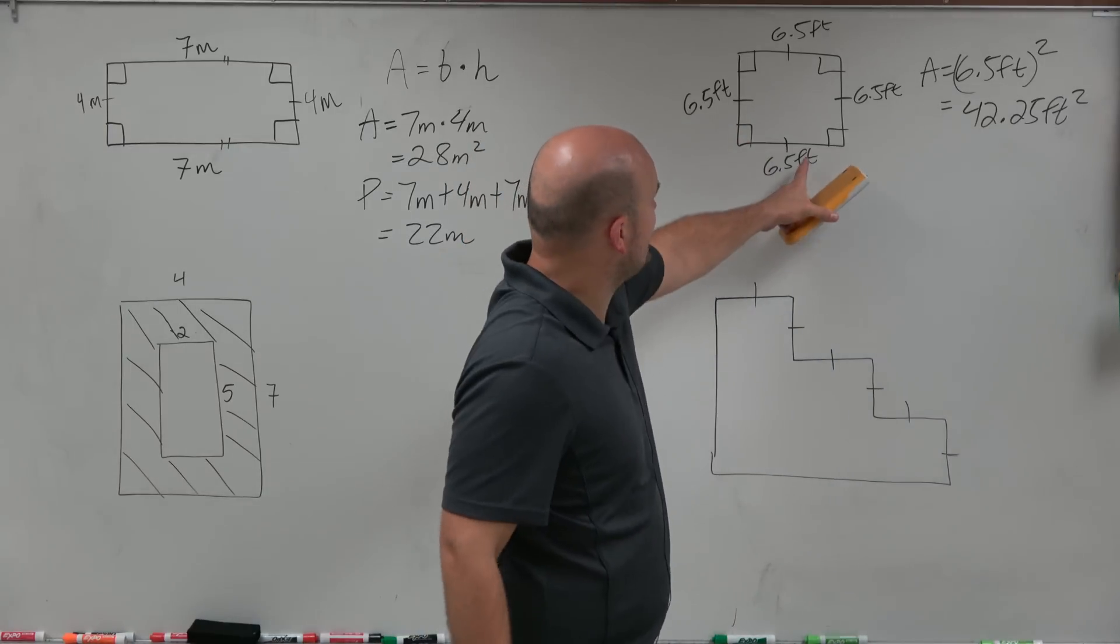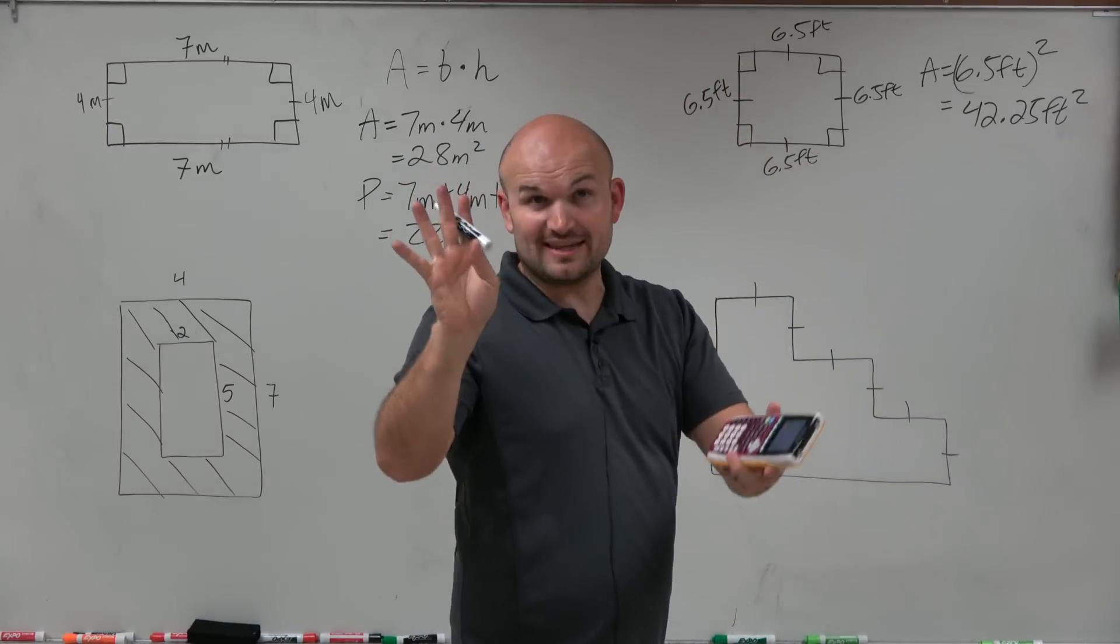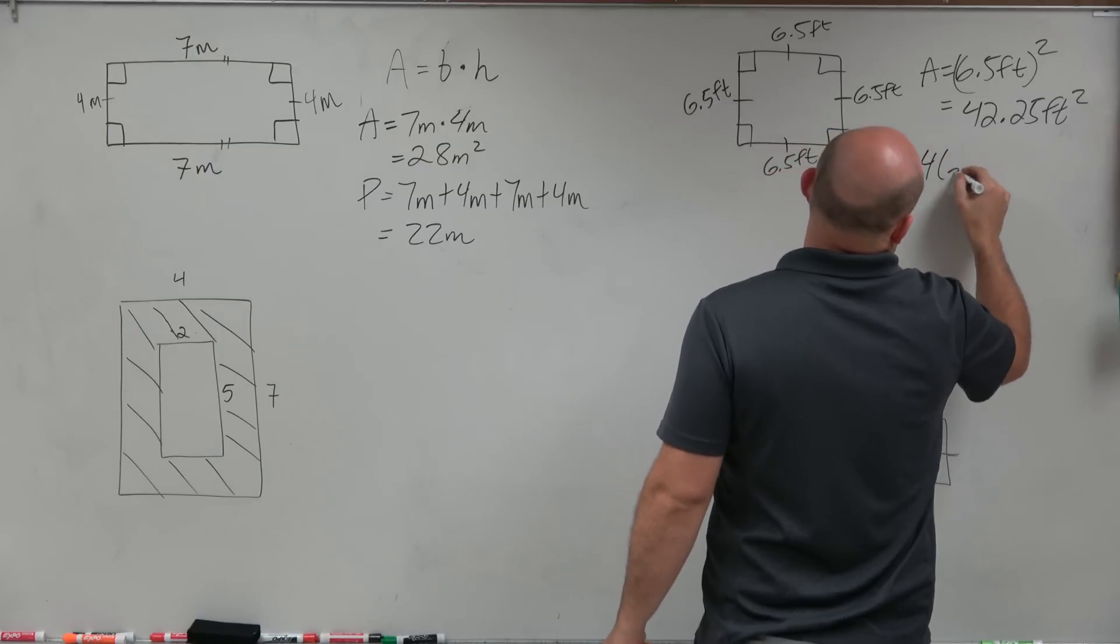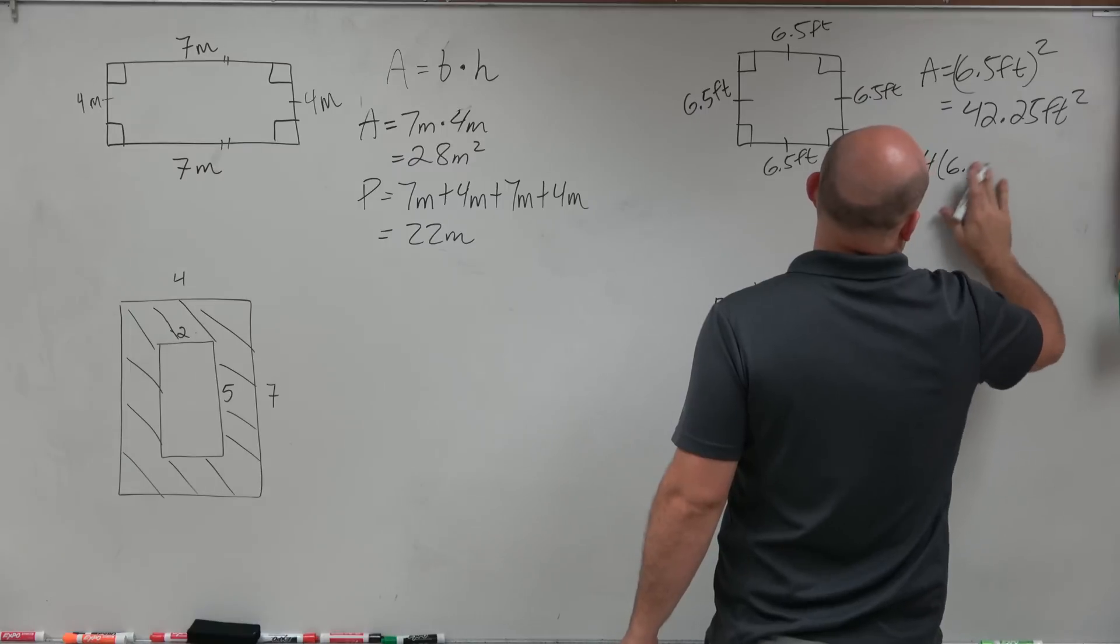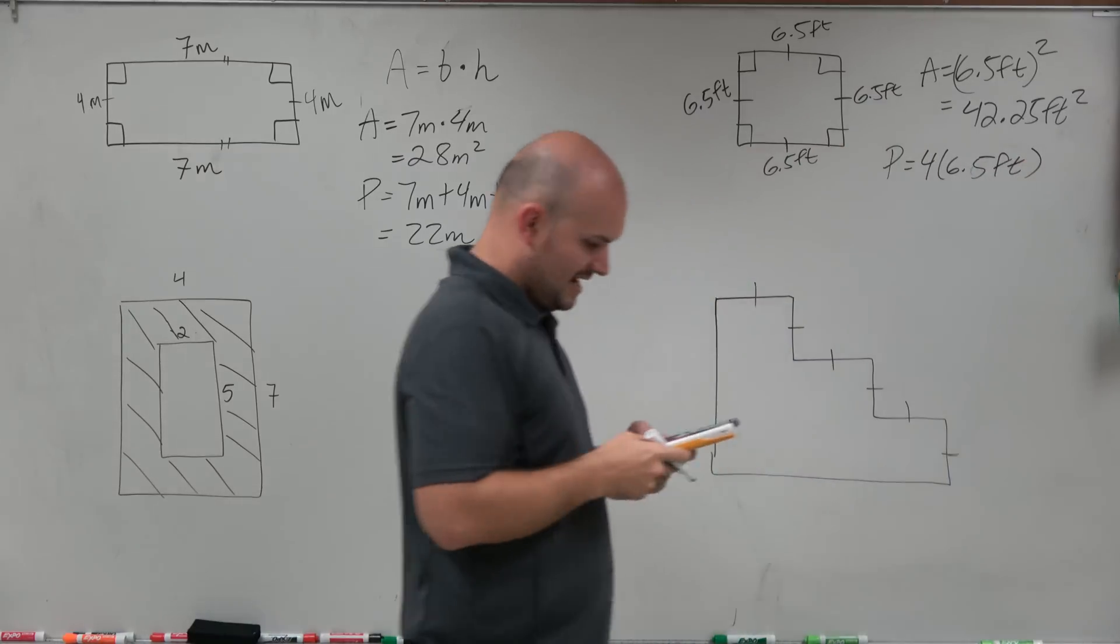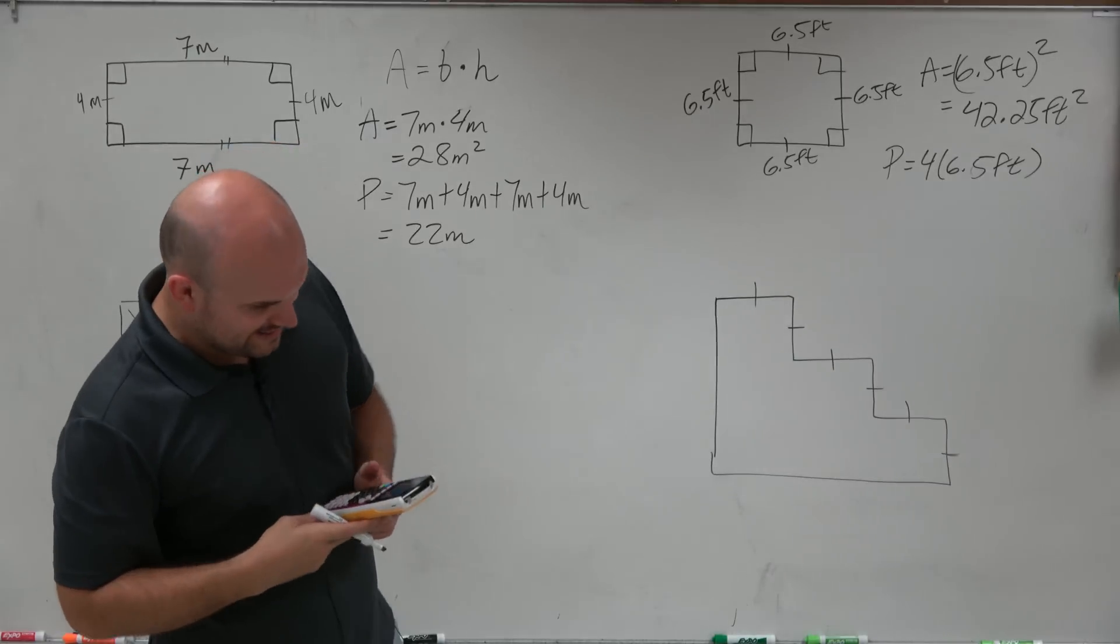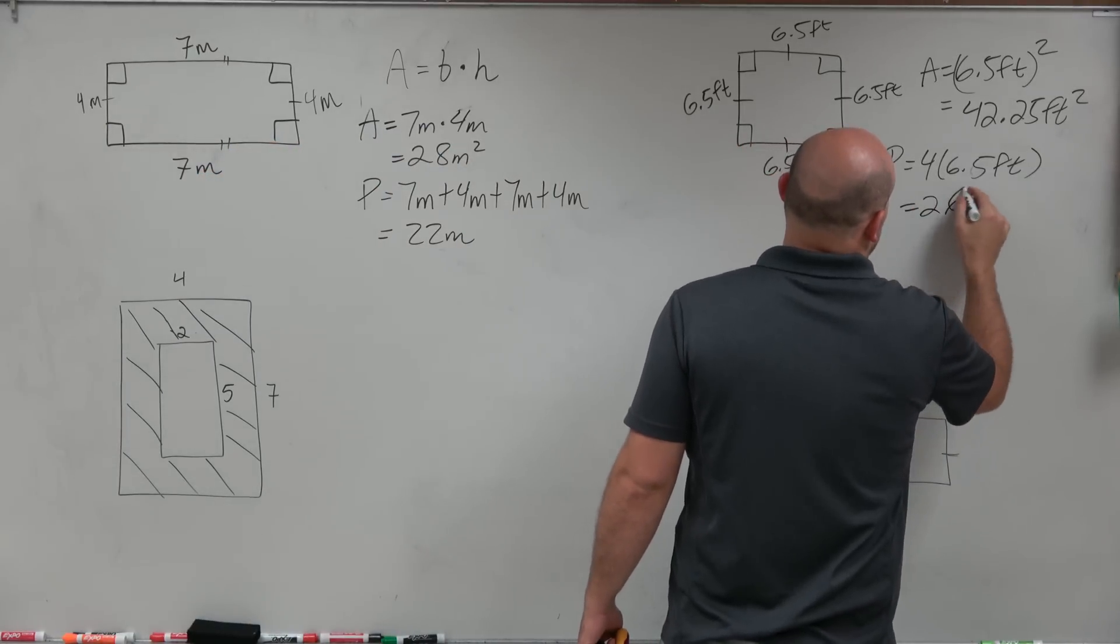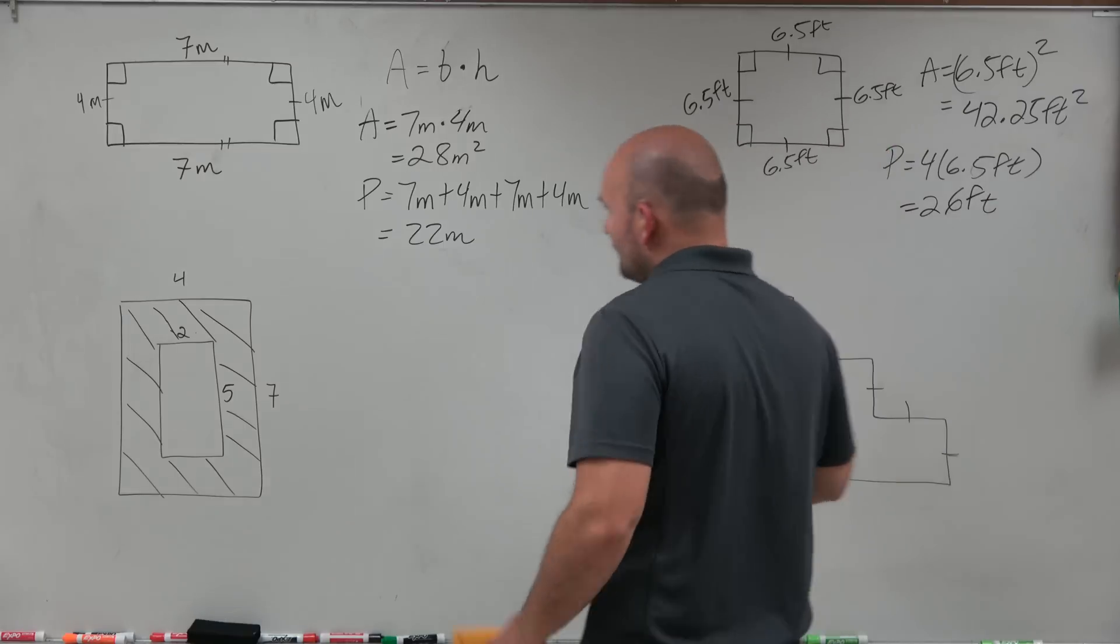To find the perimeter, I'm basically just adding up all these sides. So there's four side lengths and they're all 6.5. So for the perimeter, I'm just going to do 4 times 6.5 feet, and 4 times 6.5 is 26. Equals 26 feet.